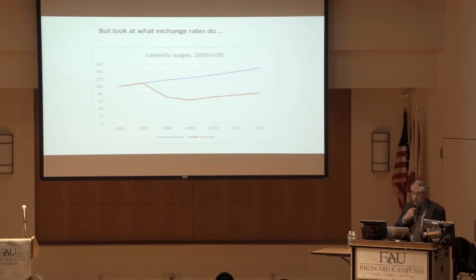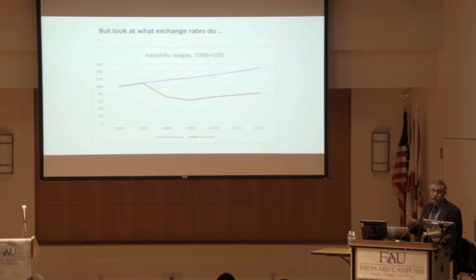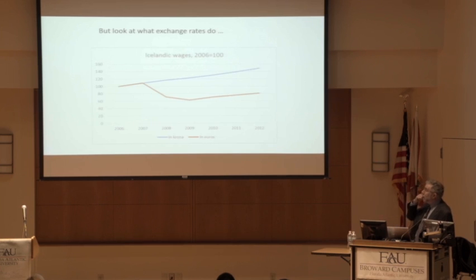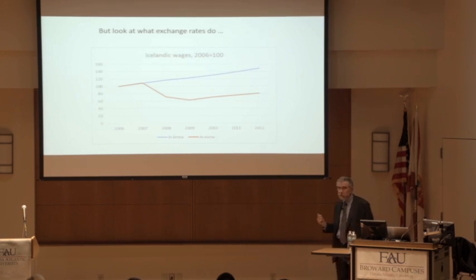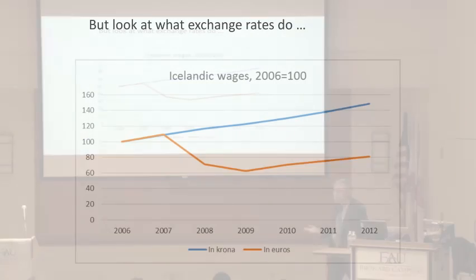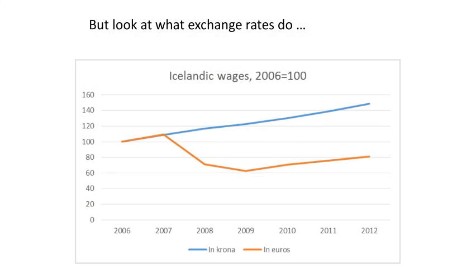I've showed you all of those European countries with terrible economic crises and still wages not falling. Meanwhile, you have Iceland — not a country with a population of Brooklyn, but a country with a population of one neighborhood in Brooklyn. Wages did not fall in krona, but they fell drastically. Basically Iceland had a 40% fall in wages measured in euros, because the krona was devalued. That's telling you that wages really are sticky in domestic currencies.